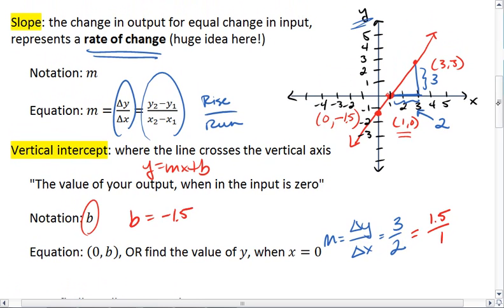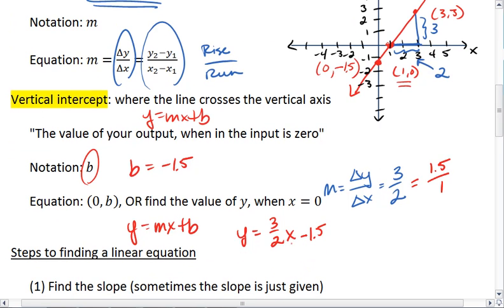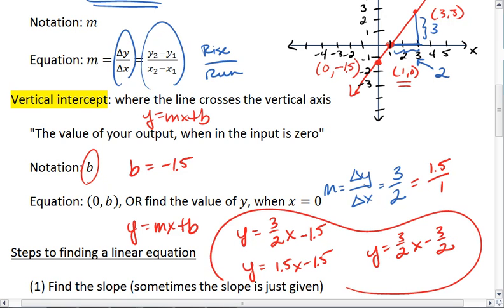So the equation for this line where we have y equals mx plus b would be y equals 3 halves x minus 1.5. Or you can write it as y equals 1.5x minus 1.5. Or y equals 3 halves x minus 3 halves. All three of these are correct.